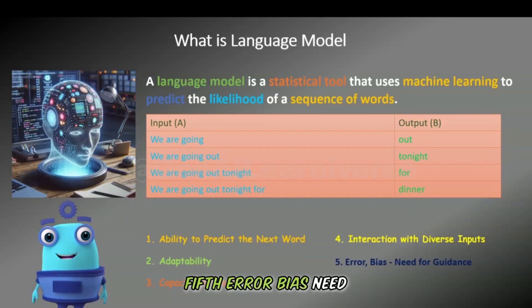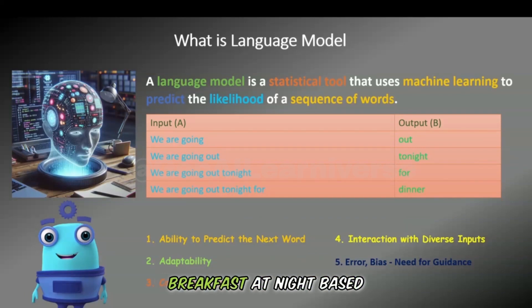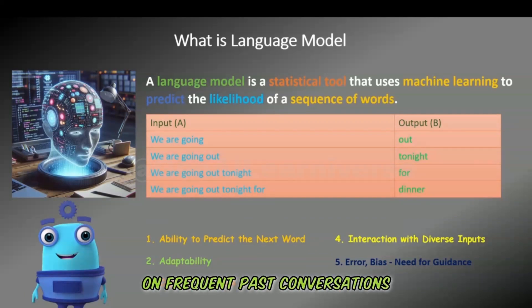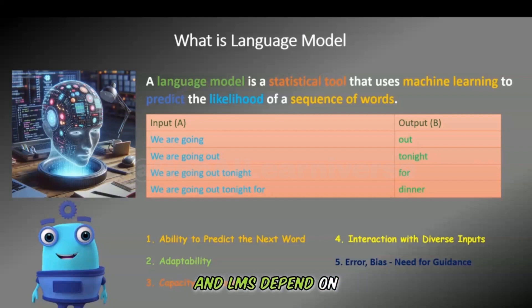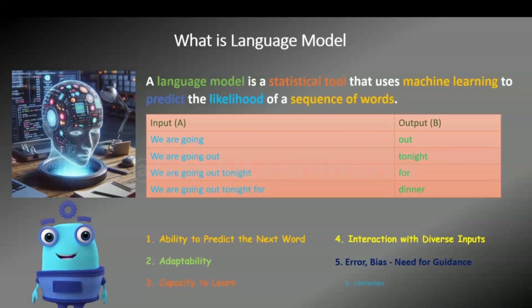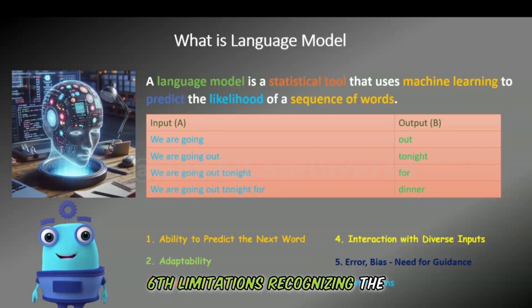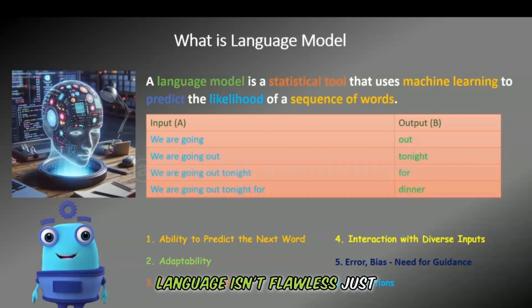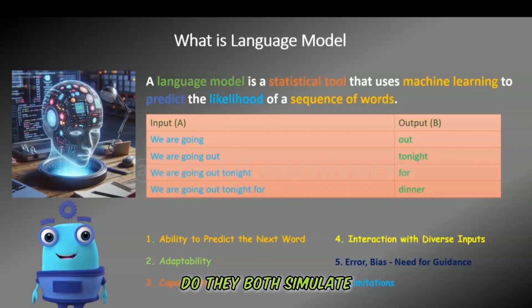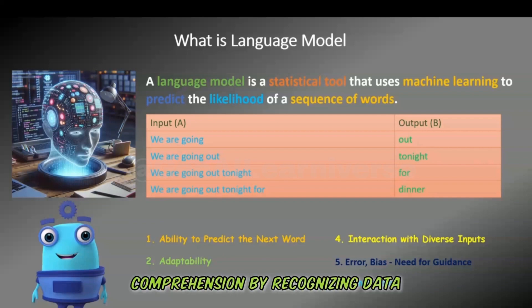Fifth, error and bias — need for guidance: just as Blue mistakenly referred to breakfast at night, based on frequent past conversations, LMs can also err, influenced by the most common patterns in their training data. Both Blue and LMs depend on guidance to learn from their mistakes and improve accuracy. Sixth, limitations: recognizing the limitations of both is crucial. Blue's grasp of language isn't flawless, just as LMs don't truly understand language as humans do. They both simulate comprehension by recognizing data patterns.